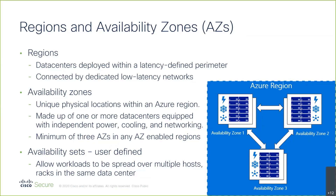Availability zones are within a region. Not every region, but most of the big regions — the ones we're going to be dealing with, what we call recommended regions — have at least three availability zones. This is how you get your redundancy.